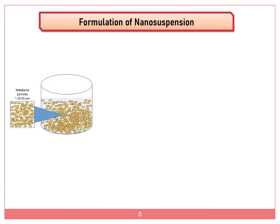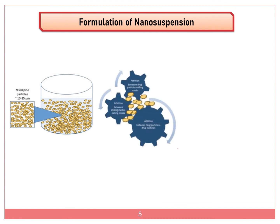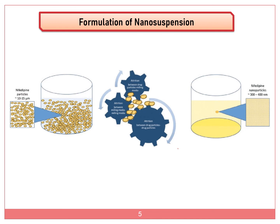As an example of wet media milling, a suitable solvent is used in which nifedipine drug is dispersed, with an initial particle size of 10 to 15 micrometers. Zirconium beads with a ratio based on particle size are added depending on the volume of particles and kept in wet media milling for optimized hours. Attrition between the particles and the zirconium beads causes reduction in particle size. Finally, after an optimized time, nifedipine nanosuspension is obtained as a clear solution with a particle size of 300 to 400 nanometers.